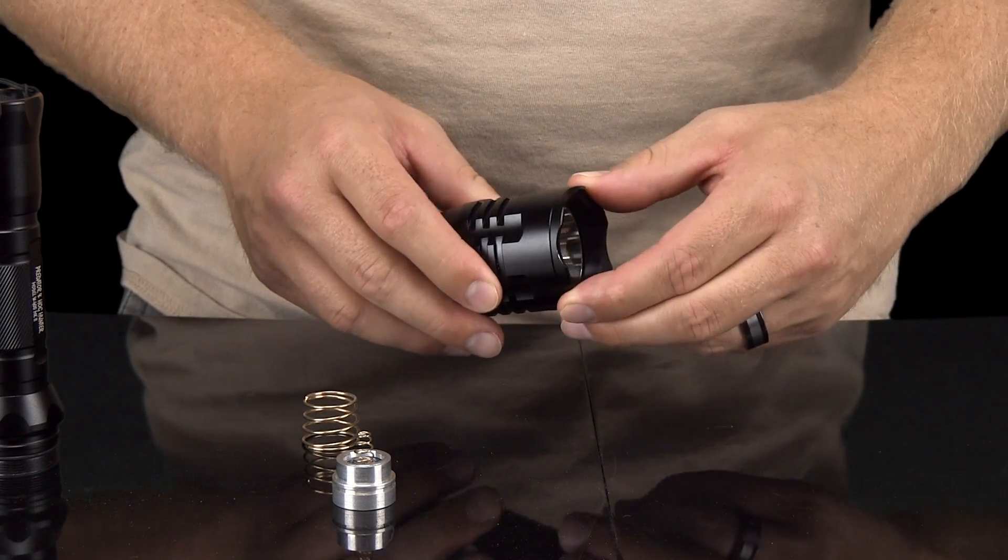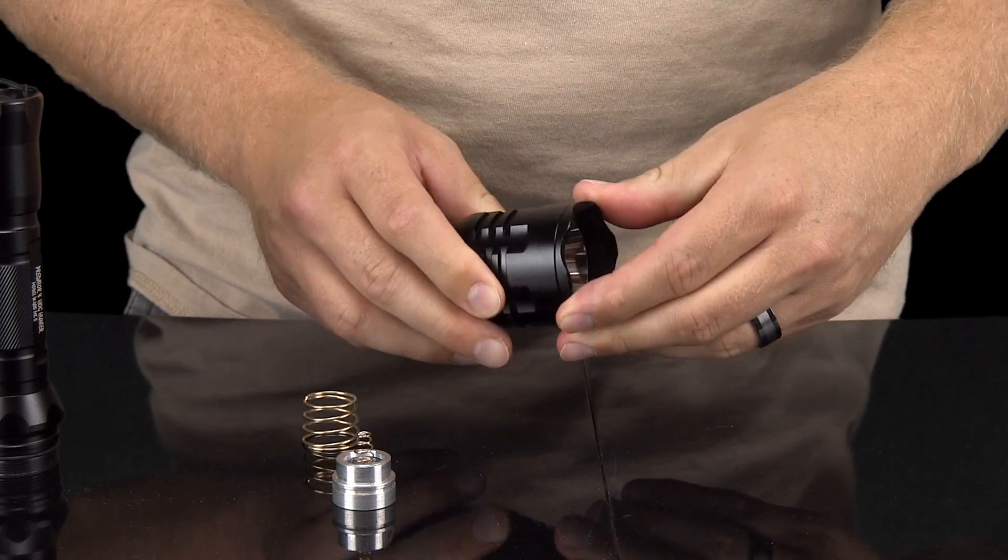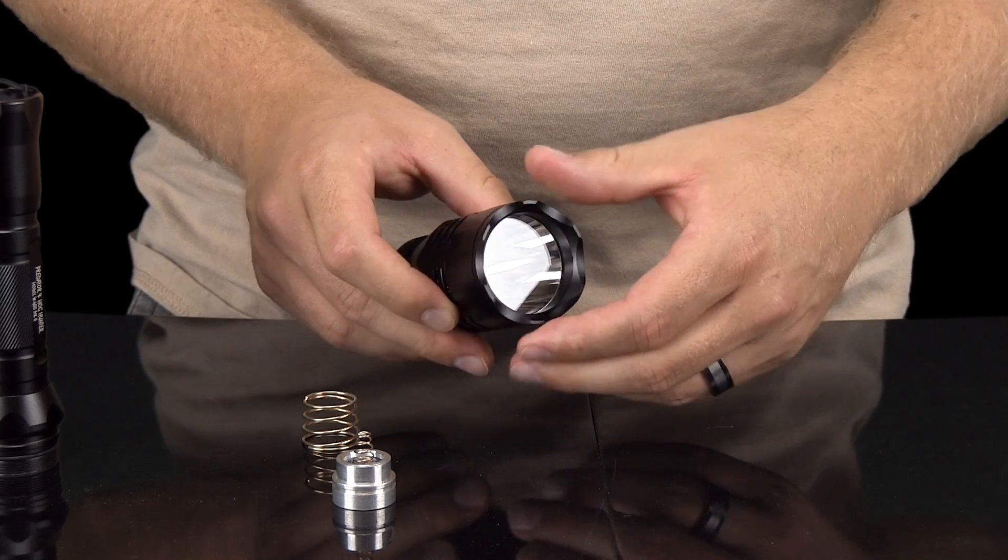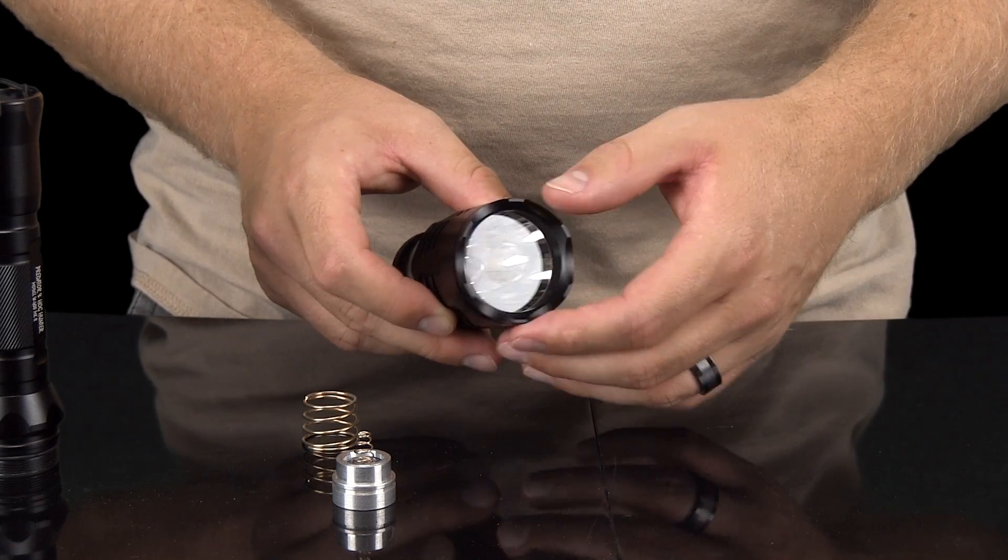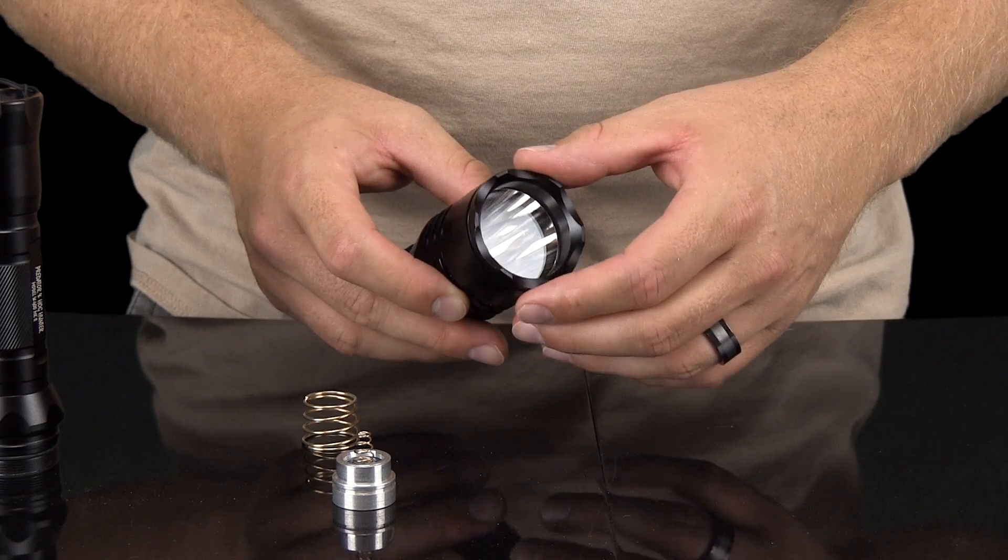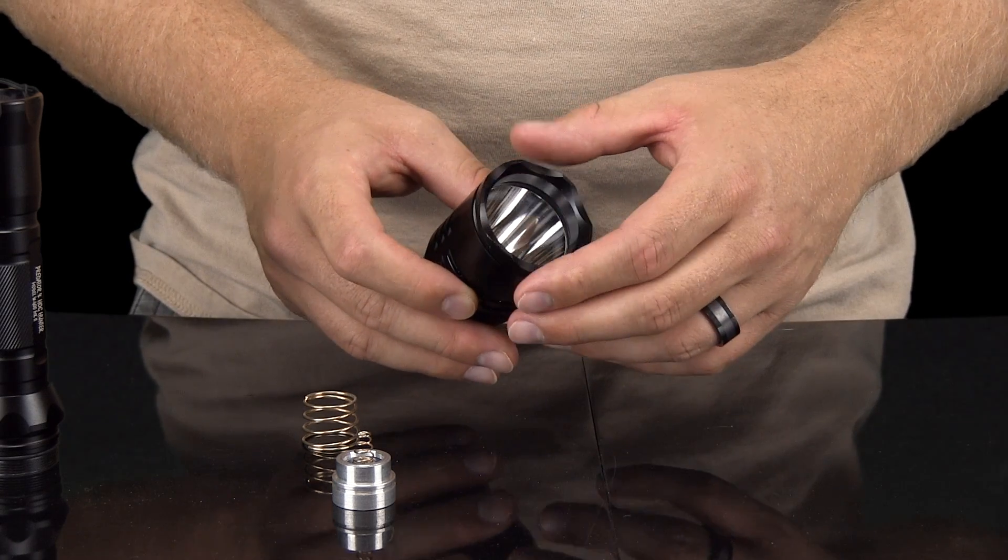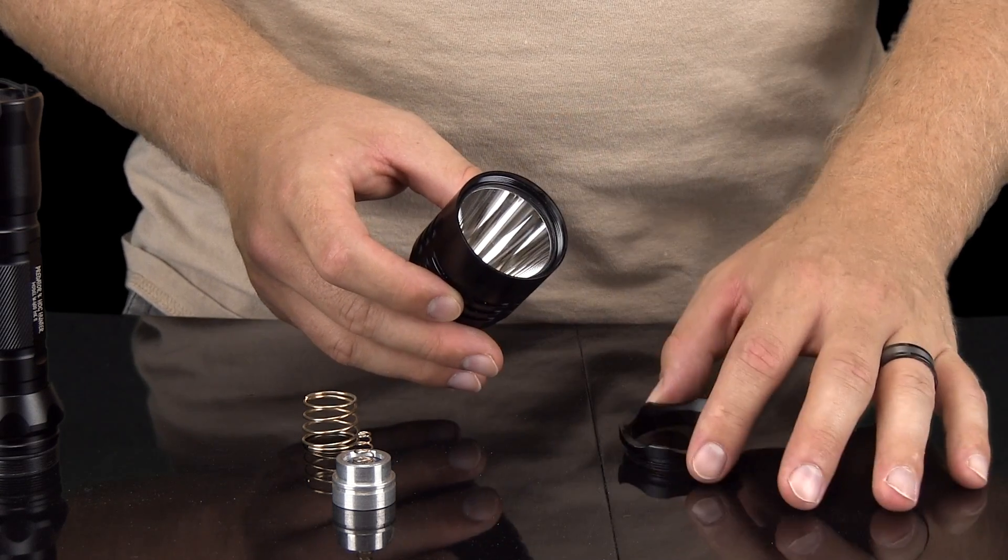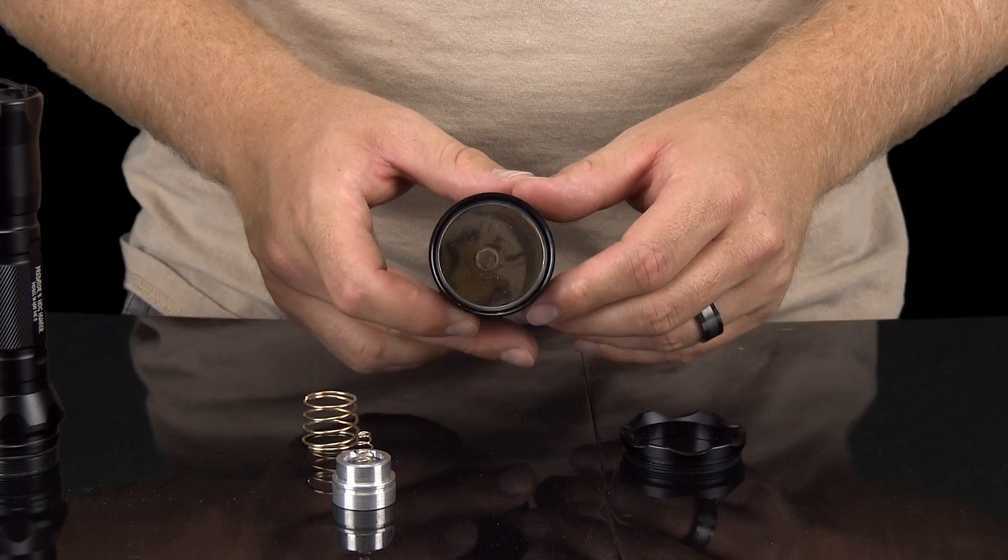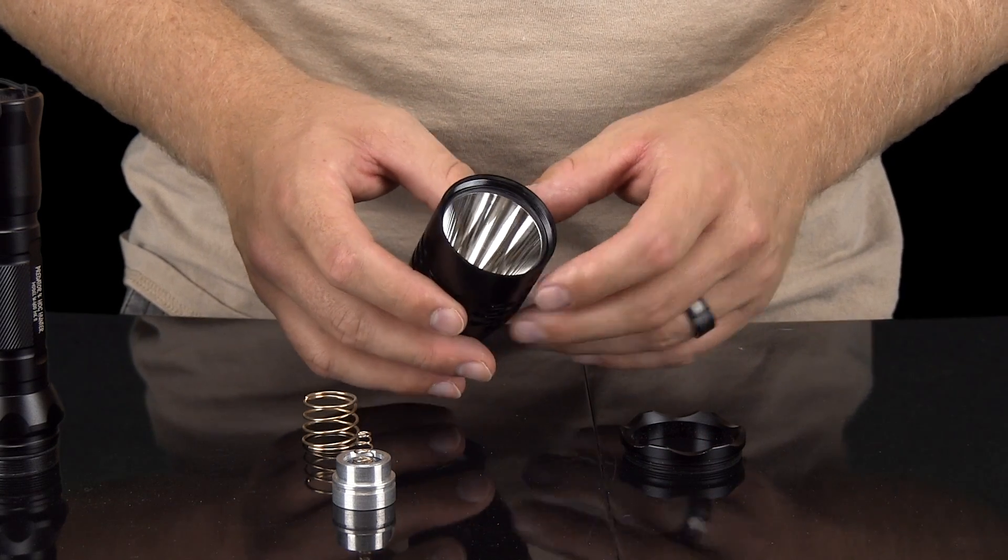Once the bezel is removed, you will focus your efforts on the front of the bezel where you will find the bezel extension. Your first step is to carefully remove the bezel extension from the bezel. Once the bezel extension is removed, you will see underneath a small O-ring and a glass lens.